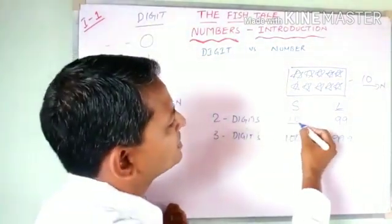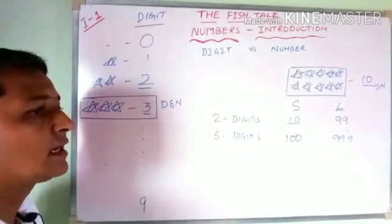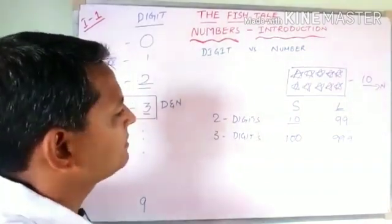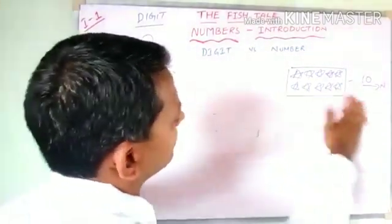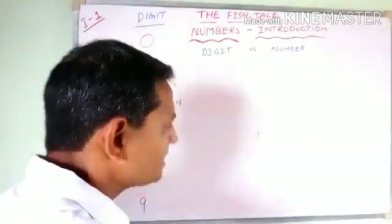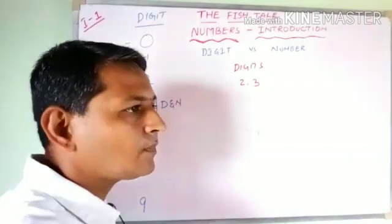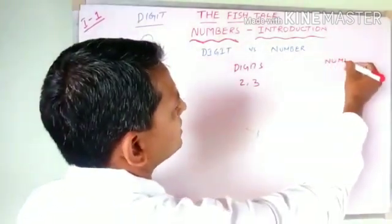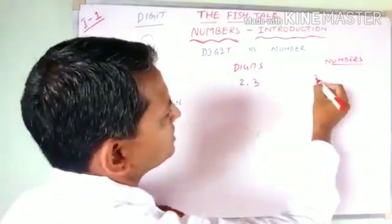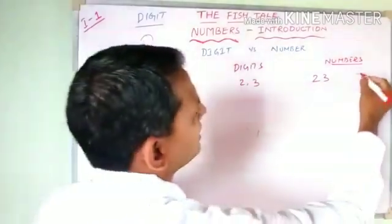Now let us understand how numbers can be made using digits. If the digits given are 2 and 3, what numbers can be formed using these two digits? One number that can be formed is 23. Can there be another number? Yes — the other number that can be formed is 32.